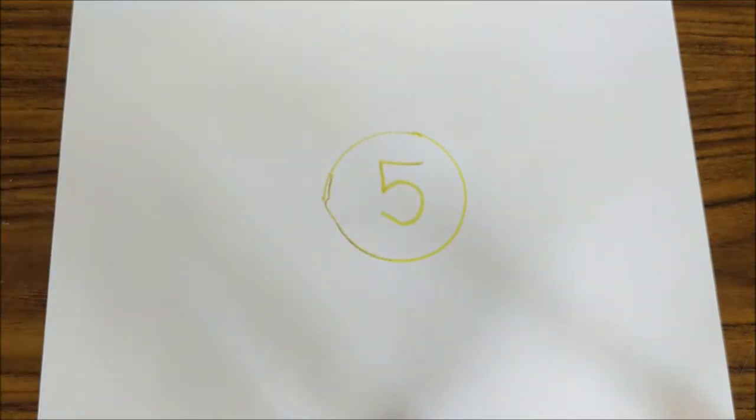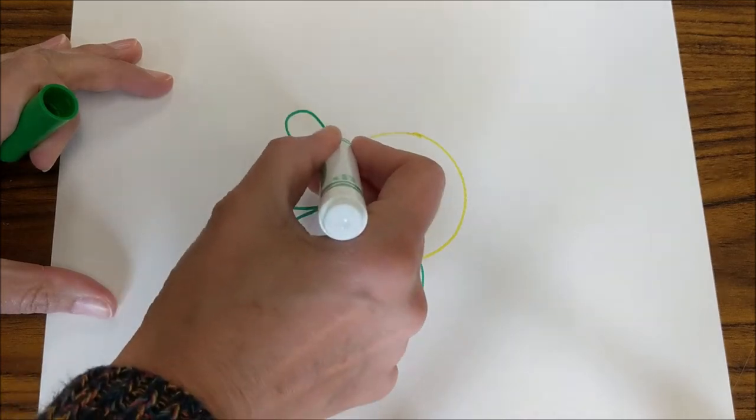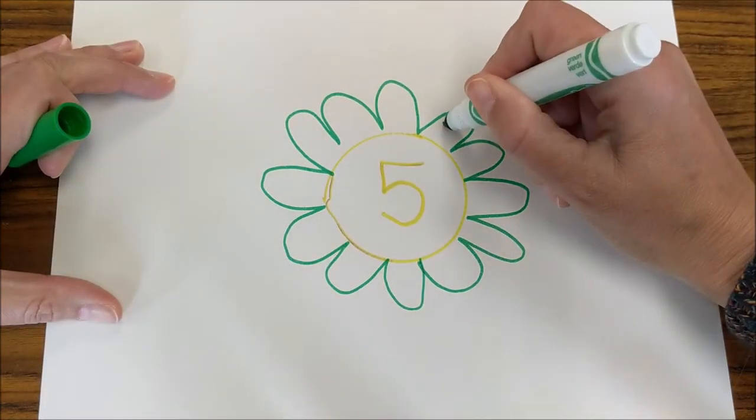Write that number in the center of the flower. Choose another color and make your 12 petals around the outside and then fill in the numbers 1 through 12.